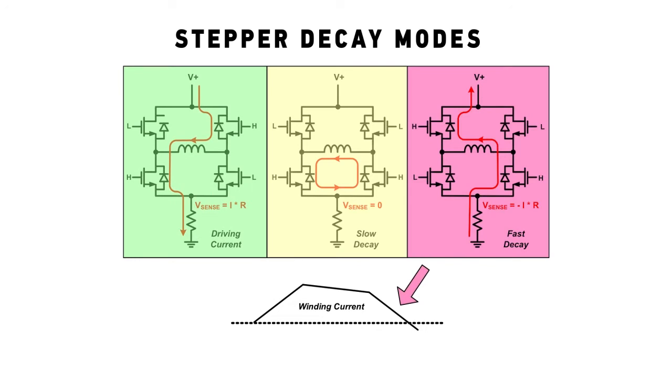In fast decay, the sense voltage is negative, which can't be measured by most stepper ICs. Since the current control circuitry is blind to what the current is doing in decay mode, current regulation suffers, resulting in poor motor performance.